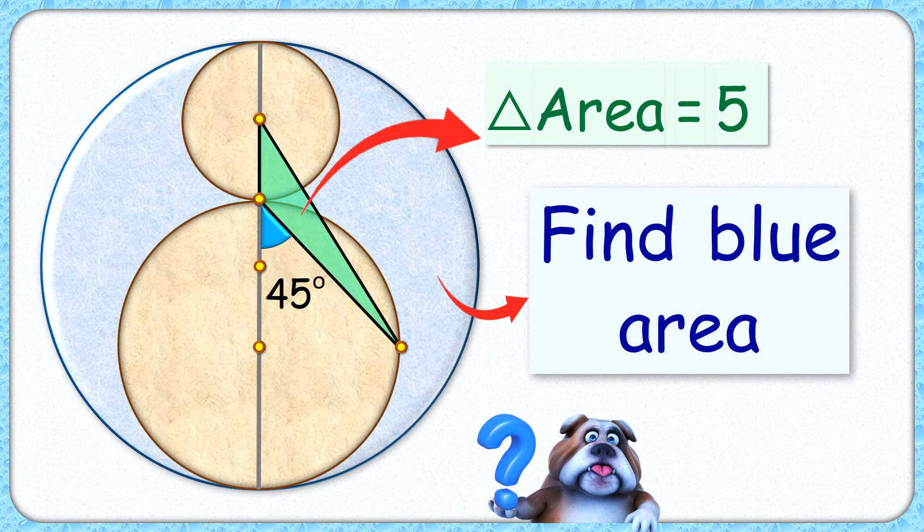In this interesting question, we have three circles whose centers lie on a straight line. Given is the area of this green triangle is 5 cm square. The angle made by it on the diameter is 45 degrees.